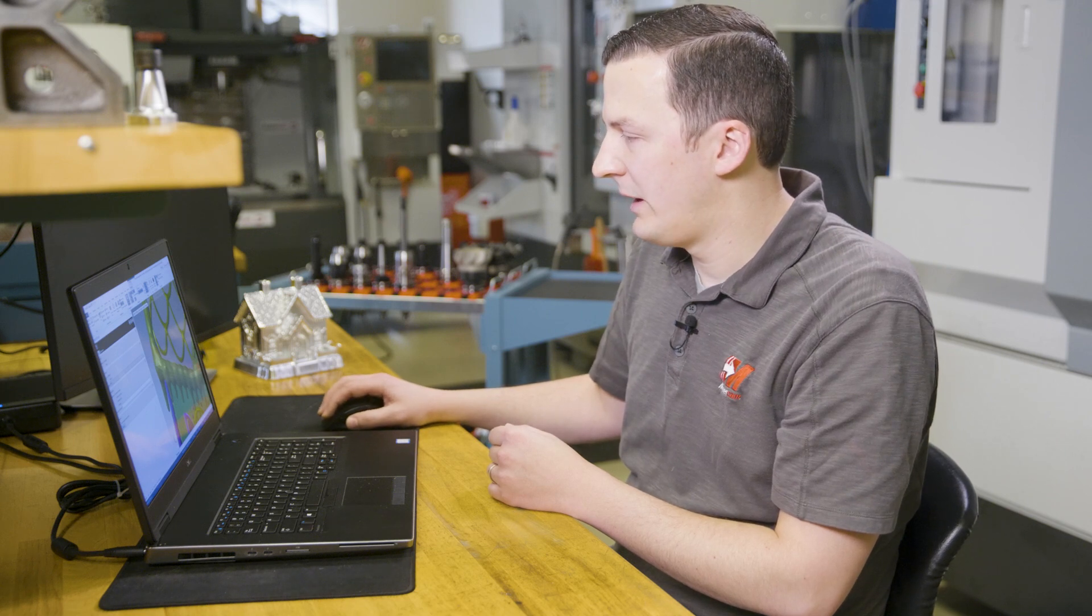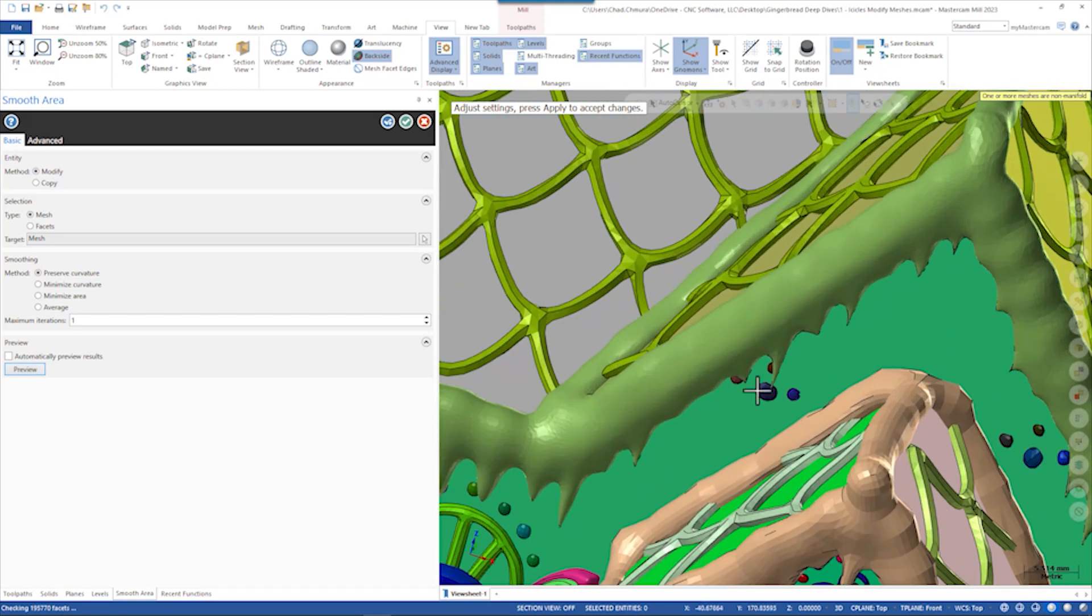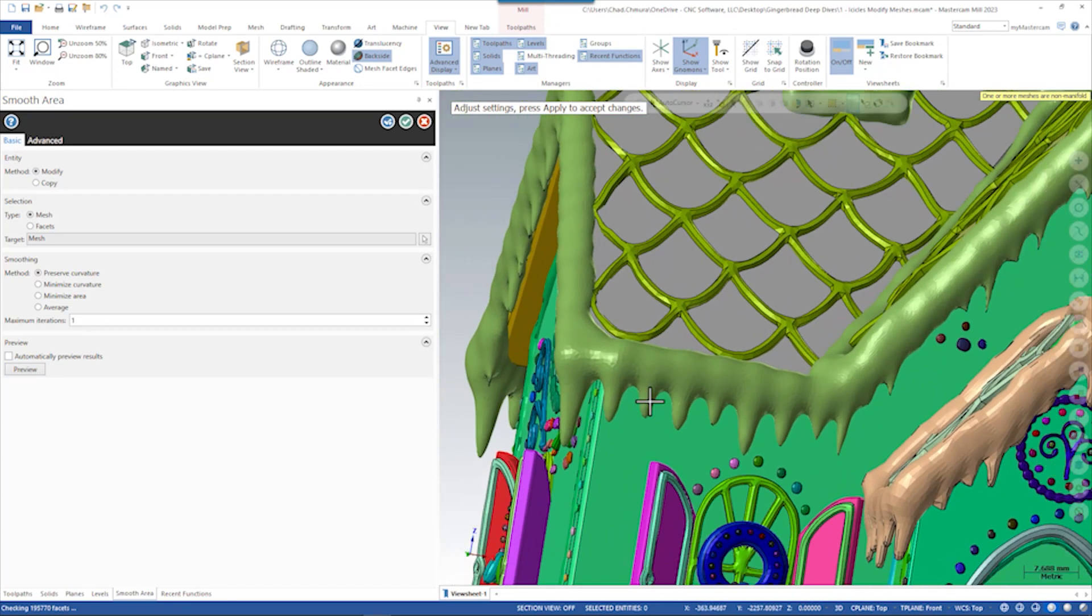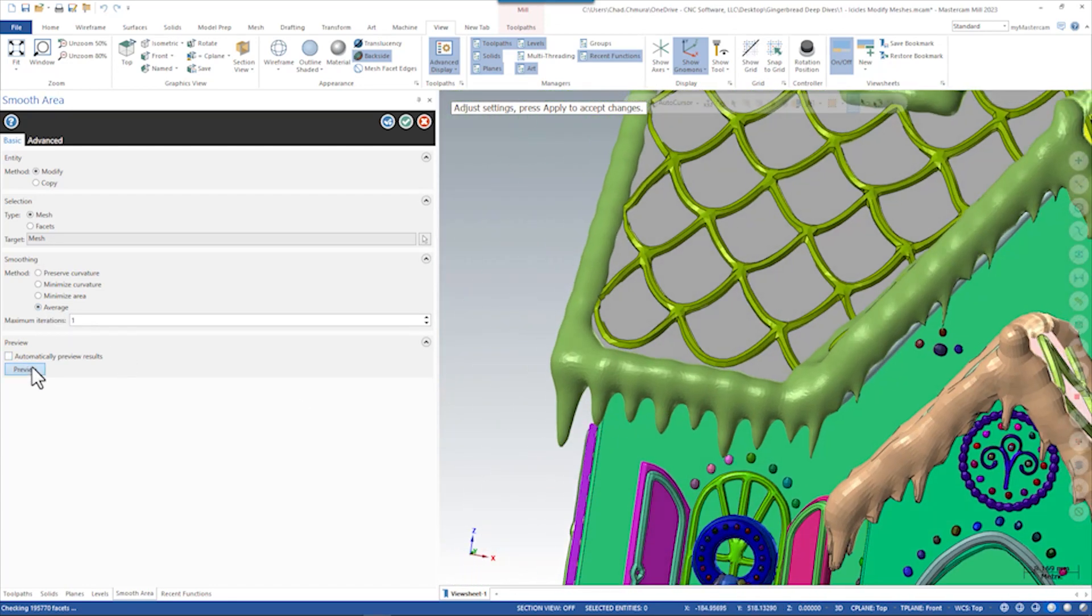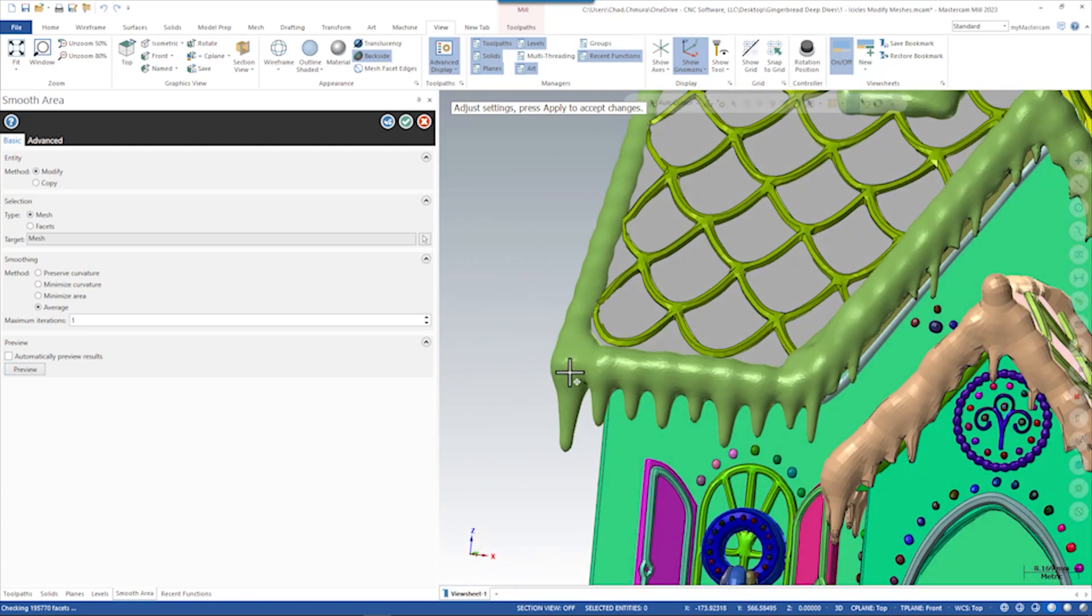One that I generally use as my first try is average, and what average gets us is something that looks a lot closer to the original mesh body just with a little bit more smooth curvature. This is something that I think we could very much work with.